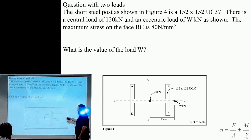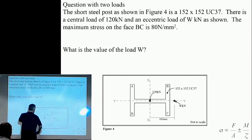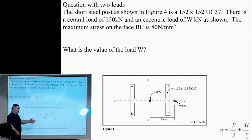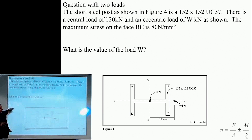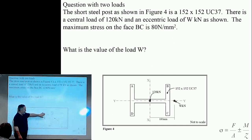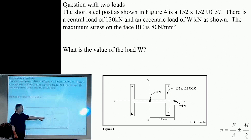So here's an example where we have a column or post under load. This is how we can make questions awkward for an exam, where we have a load of 120kN being applied in the center. In terms of the stress from that, it's 120 divided by the area, and that will be the same stress at A, B, C, and D. There's no moment from the 120.